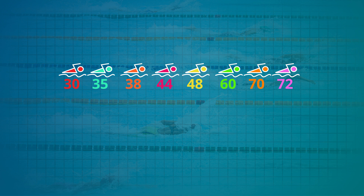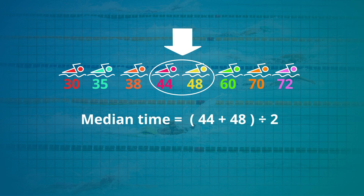In this example there are two times in the middle. What we do is find the time that's halfway between these. Add 44 and 48 and then divide by two. So the median time is 46 seconds.